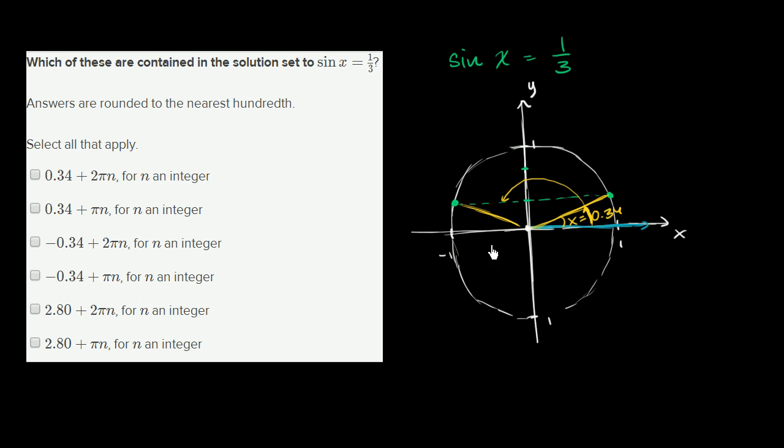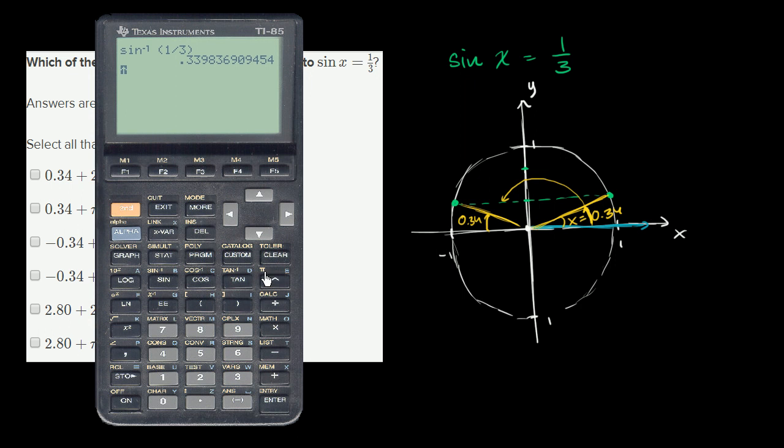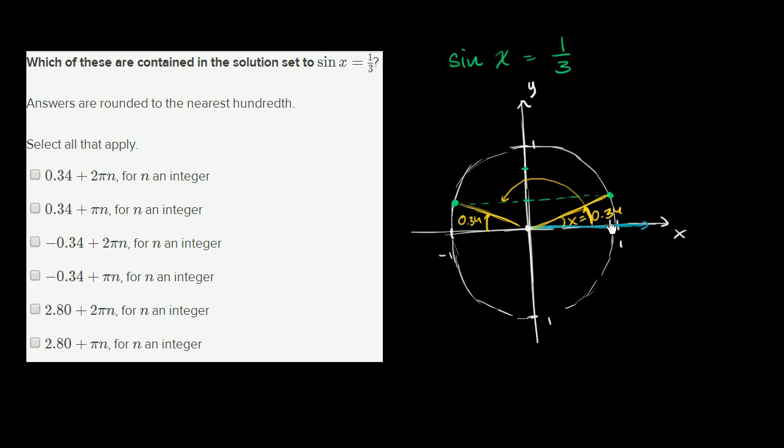But what would this thing over here be? It's going to be if we go to the negative x-axis and subtract 0.34. If we take π minus the previous answer, it gets us, if we round to the nearest hundredth, 2.80 radians. So this is 0.34 radians, and this one right over here, if we go all the way around, is π minus 0.34, which is 2.80 radians rounding to the nearest hundredth.